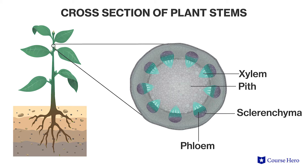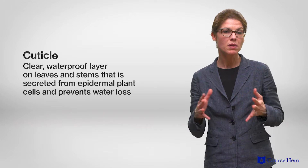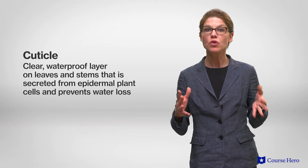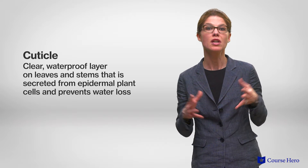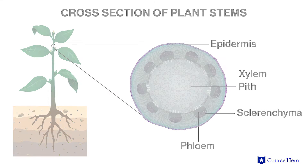The outer coating of a leaf and stem, which has a protective cuticle or waxy layer, is the epidermis, which is typically a single cell layer. The epidermis is much like the skin that covers and protects human beings. The cuticle, which is secreted from epidermal plant cells, helps to prevent water loss and also to prevent invasive infection from attacking the plant.